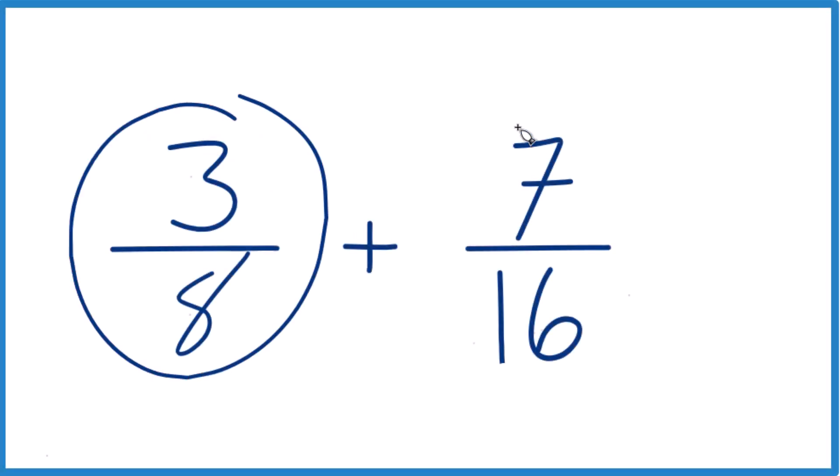Okay, we have three eighths and seven sixteenths. How do you add these two fractions together?